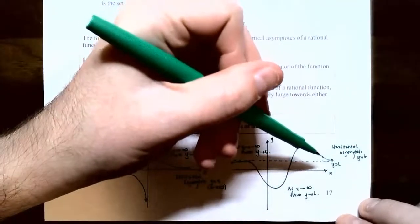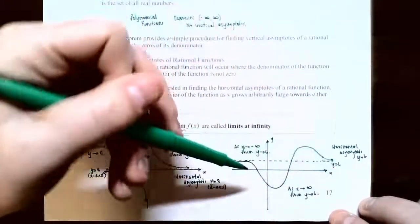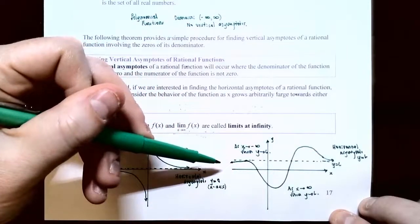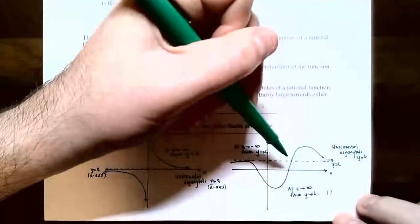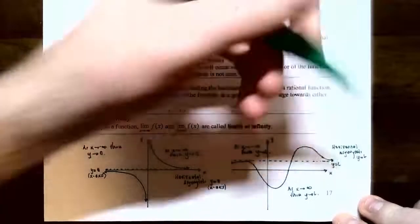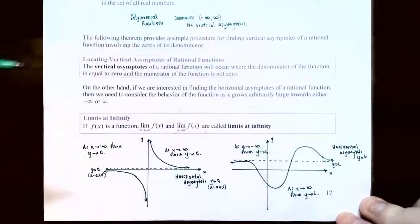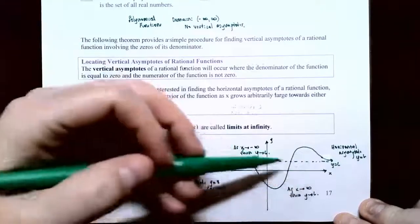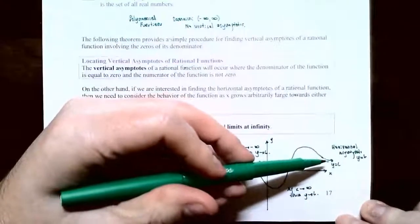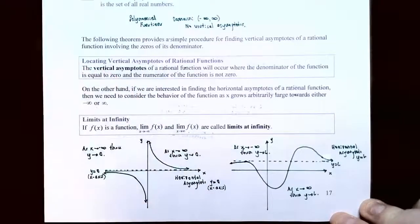An important distinction: you can actually cross a horizontal asymptote, but you cannot cross a vertical asymptote. Horizontal asymptotes are not part of the graph, which is why they're represented with a dashed line. For limits at infinity, you're not concerned with what happens in the middle of the graph, but rather what happens at the far ends — the graph levels out towards y equals L.